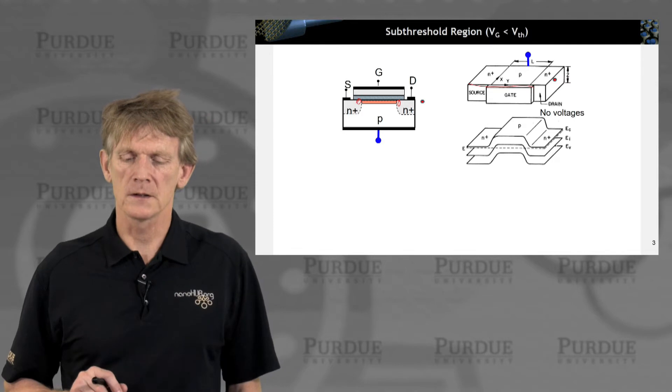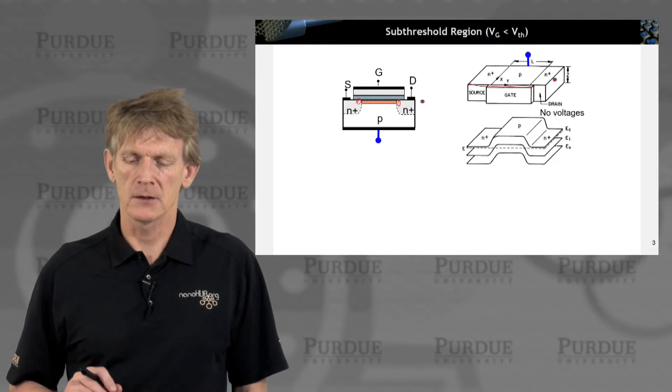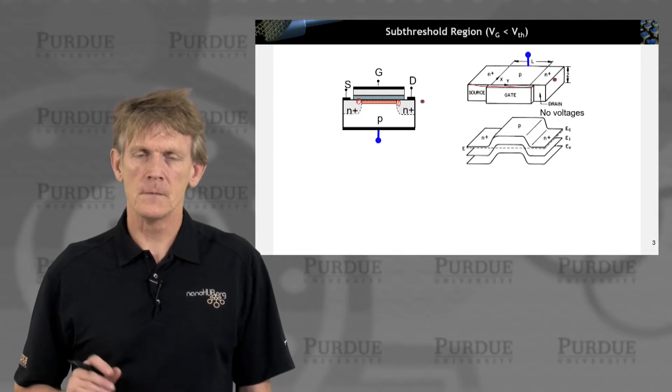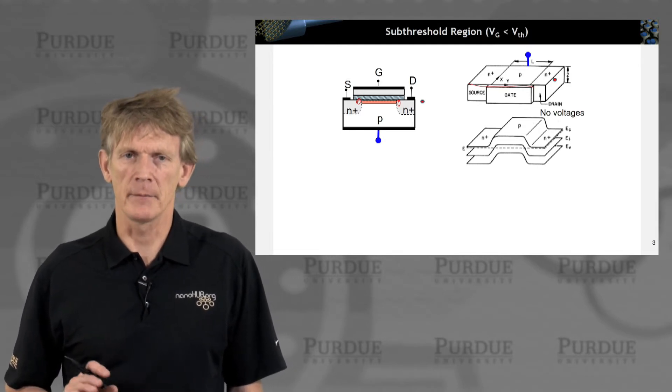So let's assume we have no voltages applied like this. And you just have band bending like this.